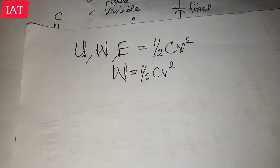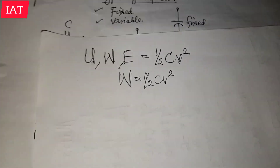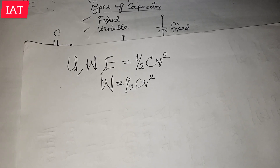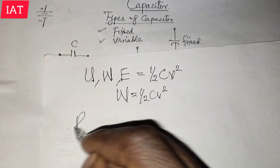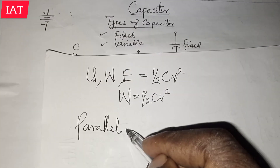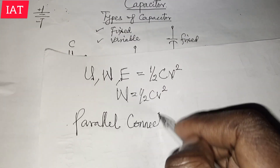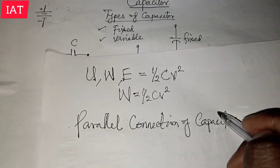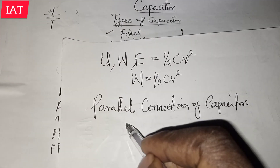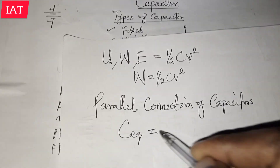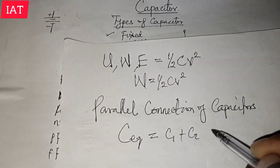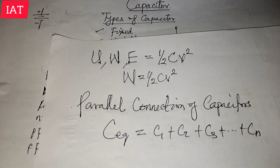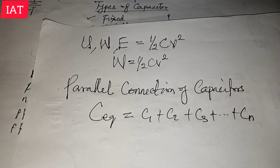Capacitors can be connected in parallel or in series. For capacitors connected in parallel, the formula for the equivalent capacitance is: C_equivalent = C1 + C2 + C3 + … + Cn, depending on the number of capacitors present in the circuit.